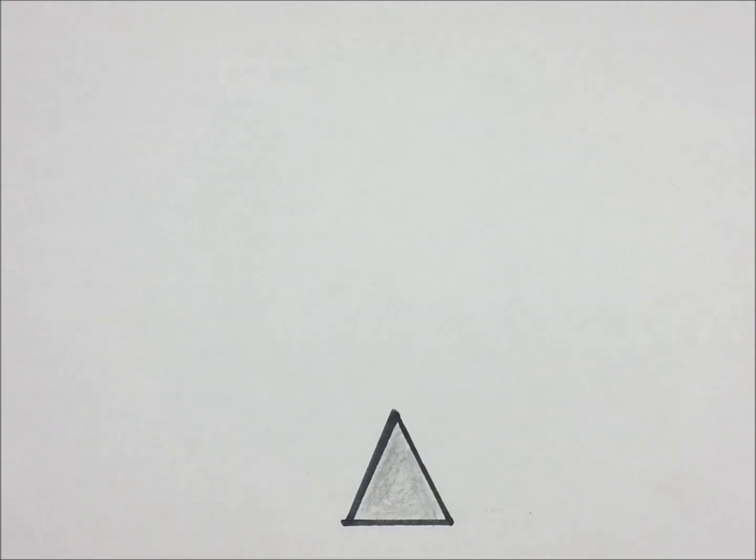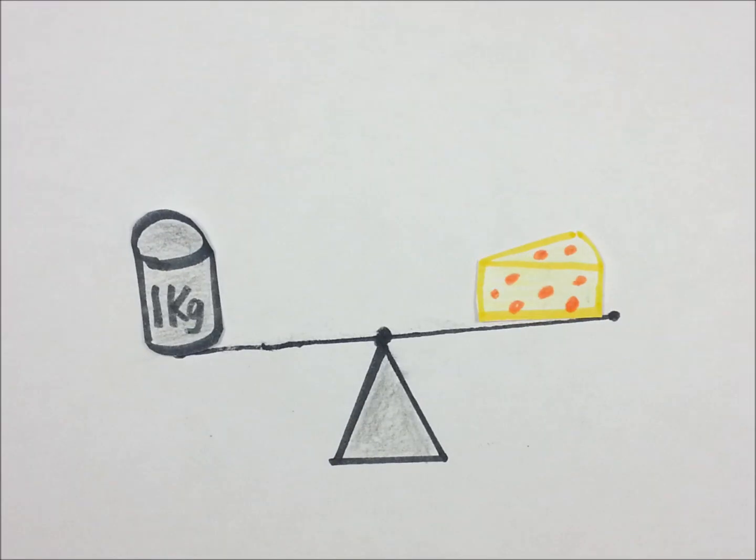To measure an object, let's use cheese. You put the one kilogram cylinder on one side of the balance, and the cheese on the other side. If the balance evens out, then you have one kilogram of cheese.